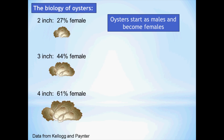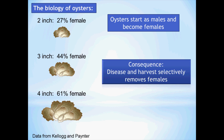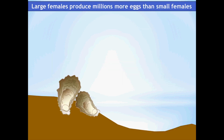Another fact of oyster biology is that oysters start off as males and become females as they develop. If you had a bunch of oysters that were two inches long, only 27% of them would be female. A bunch of three-inch oysters, only 44% would be female, and a bunch of four-inch oysters, 61% of them would be female. We actually harvest oysters when they're three inches long, and that's also when disease hits worst. The consequence is that disease and harvest selectively remove females and make it hard for oyster populations to reproduce.